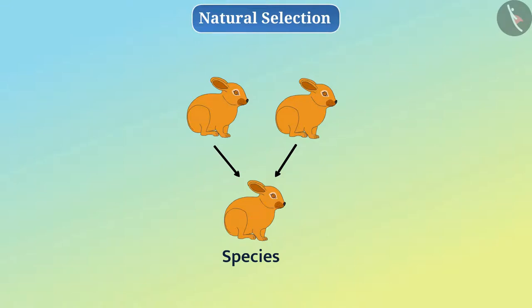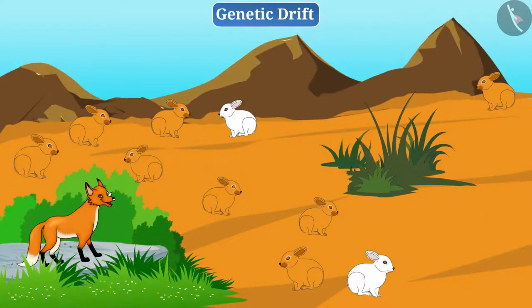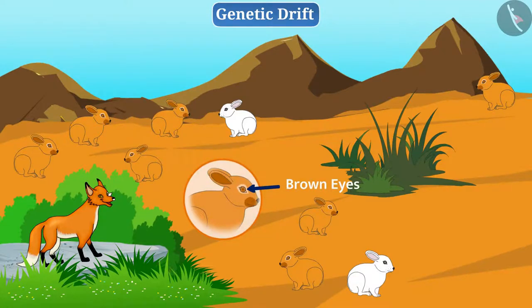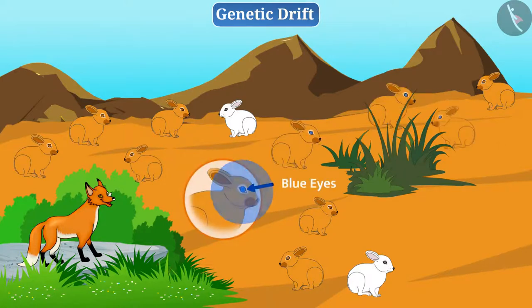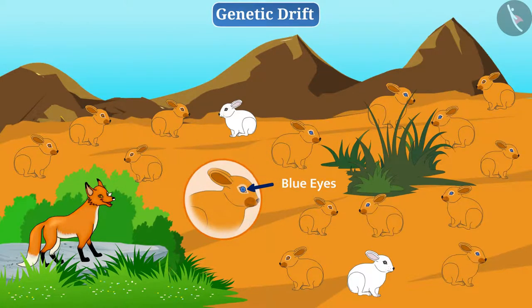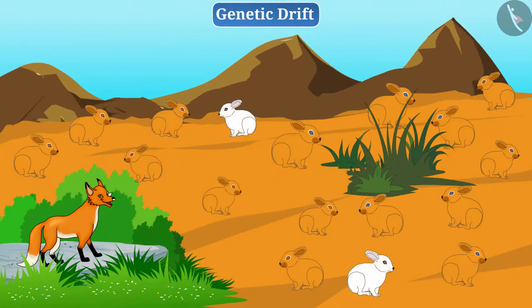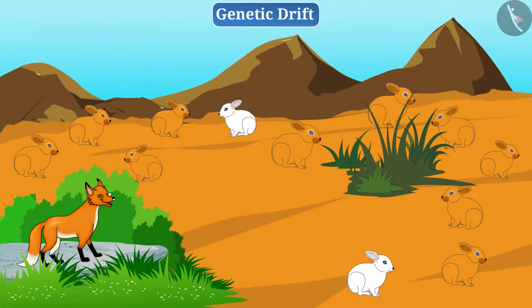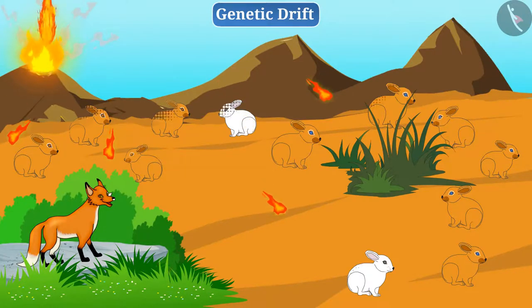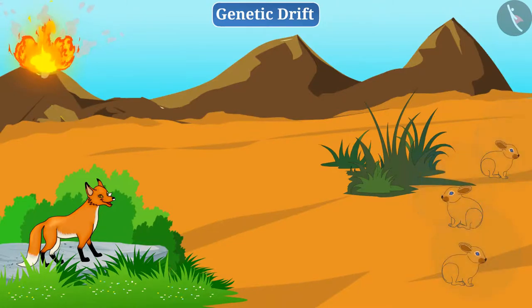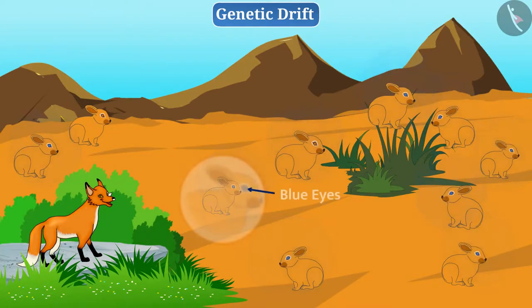Now let's talk about another interesting fact of evolution. Suppose a rabbit with brown eyes lives on the hill. Due to variation, rabbits with blue eyes are produced in the population. This time, only the eye color has changed in the rabbits. Therefore, foxes can hunt all rabbits equally, and this reduces the size of the rabbit population. One day, a lot of rabbits are killed due to a volcanic eruption on the hill. But incidentally, some blue-eyed rabbits survived. Their population then grows, and now the majority of rabbits have blue eyes.